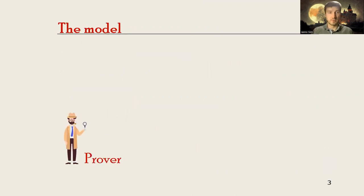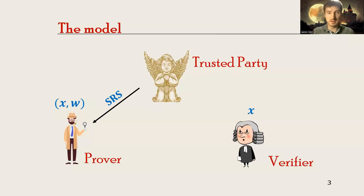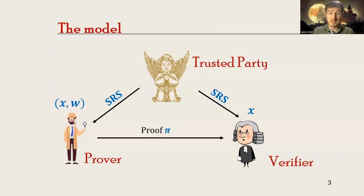The model we'll be using is the following: we have a prover, a verifier, and a trusted third party. The prover knows the statement, which is public, and some secret witness. The verifier knows only the statement. The trusted party generates a structured reference string (SRS) for the prover and verifier, and using this it is possible to generate a proof. The verifier will then either accept or reject the proof.